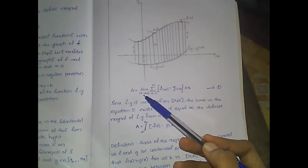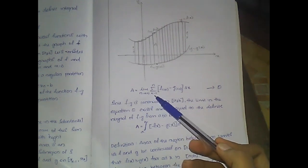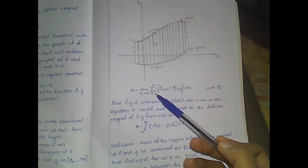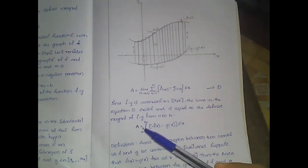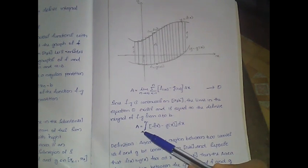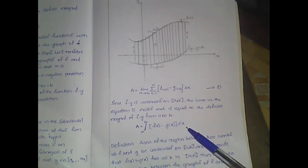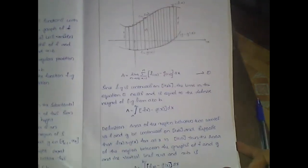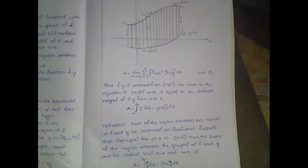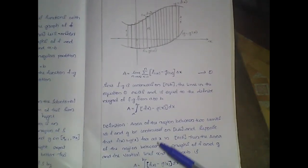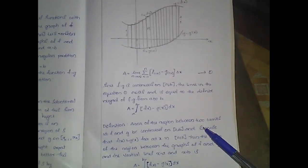This limit of the summation can be changed into a definite integral. The area is given by A equal to the integral from a to b of [f(x) minus g(x)] dx. This is the definition of the area of the region between two curves.